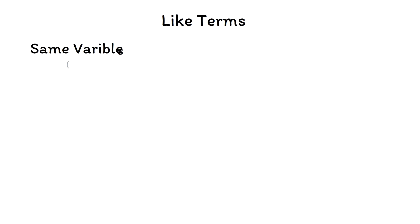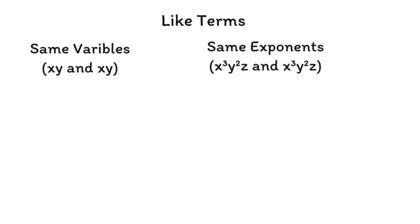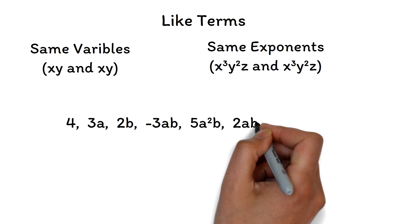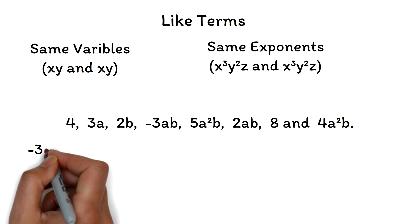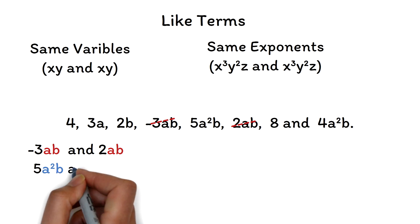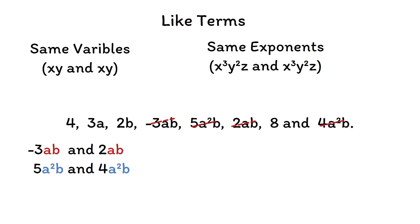Like terms have the same variables and those variables have the same exponents. Question 2: Identify the like terms in: 4, 3a, 2b, negative 3ab, 5a²b, 2ab, 8, and 4a²b. Negative 3ab and 2ab are like terms. Also, 5a²b and 4a²b are like terms — note that the letters and their exponents must be exactly the same. The constants 4 and 8 are like terms, as neither has a variable. The terms 3a and 2b have nothing that is similar to each other.